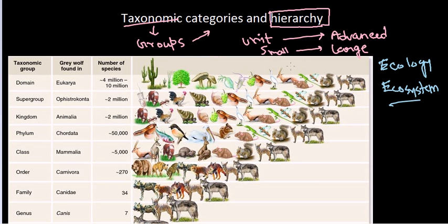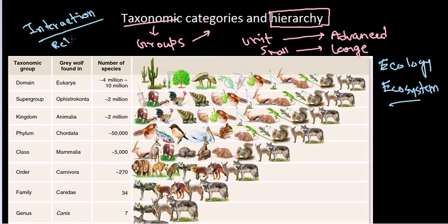So the ecosystem deals with the relationship of organisms between themselves as well as between the environment, because everything in this world is linked and related. An organism interacts with the environment, and the environment interacts within itself. In taxonomy, we not only study the classification and identification of organisms, but also we study the interaction of those organisms between themselves — how they interact. The interaction and relationship of organisms between themselves is termed as systematics.